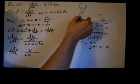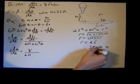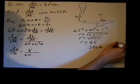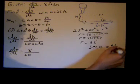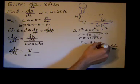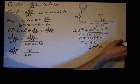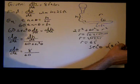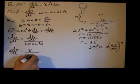So the secant of theta is equal to the hypotenuse over the adjacent side. The hypotenuse when the height equals 25 is 65, so we get 65 over 60. We really want secant squared, so secant squared of theta equals (65/60) squared. I'm just going to put that in there.